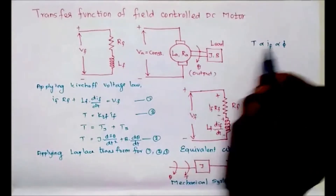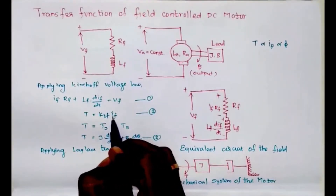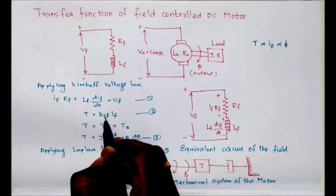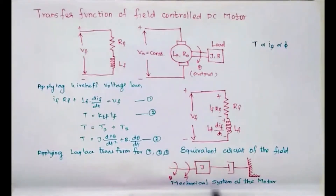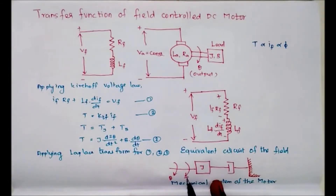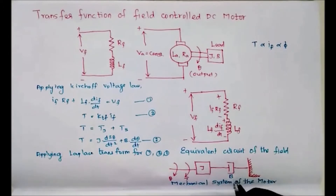From the field circuit equation we can write T = Ktf·If, where Ktf is the torque constant. Next, this is the mechanical system of the motor. Here this is the applied torque. According to the torque balance equation, applied torque equals the opposing torque due to moment of inertia and the dashpot.